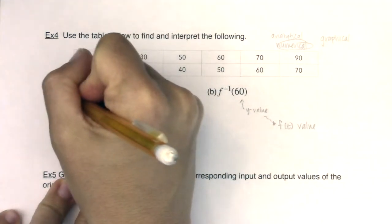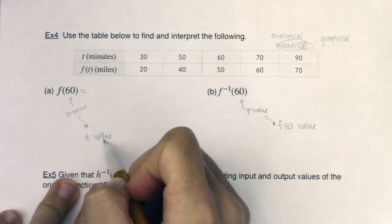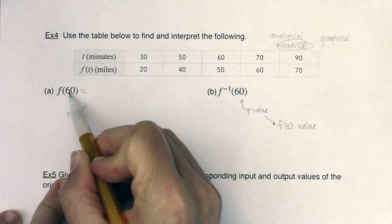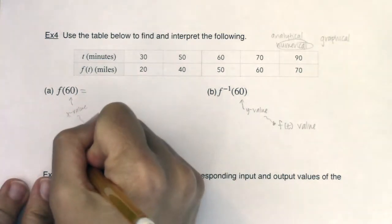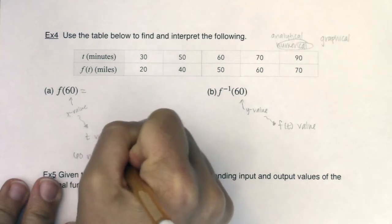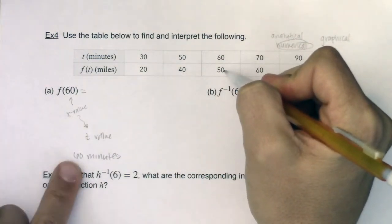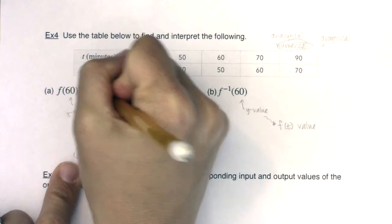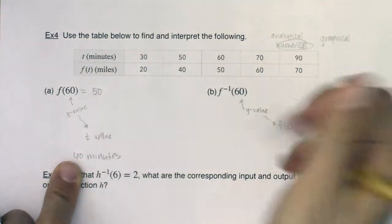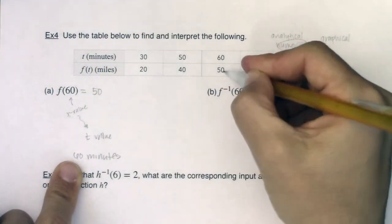So for f of 60: we're asking what is the function at 60 minutes. Looking at the table, at 60 minutes I had traveled 50 miles. So when I plug 60 in, I get 50 back out.